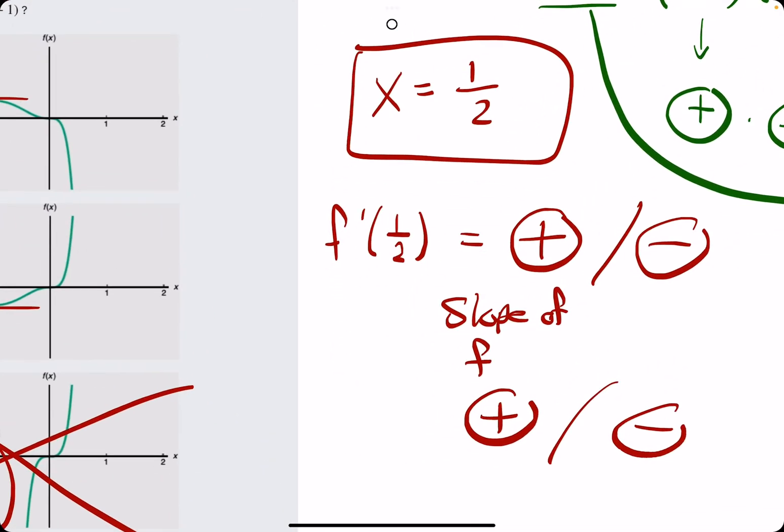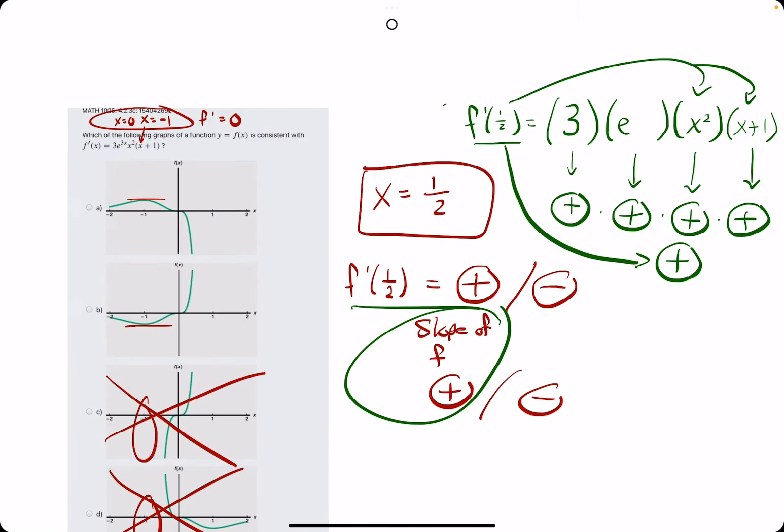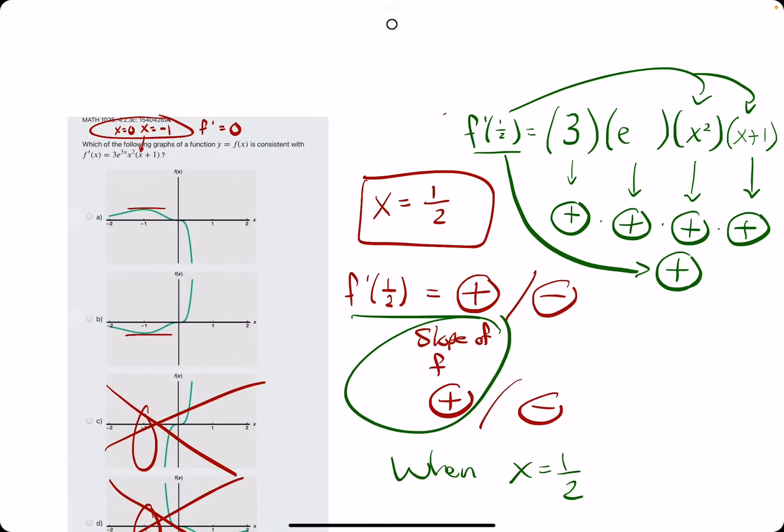So if f prime at 1 half is positive, we know that the slope of f is positive when x equals 1 half. That's very important. It's not just positive the whole time, but it's positive at 1 half because we plugged 1 half into f prime.